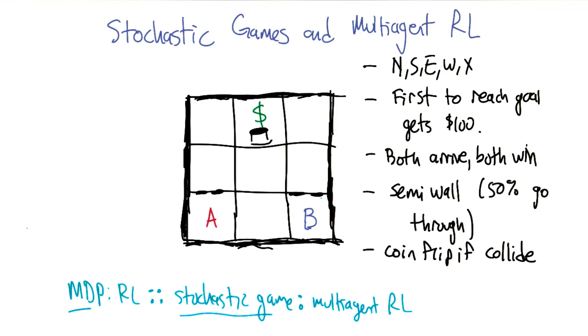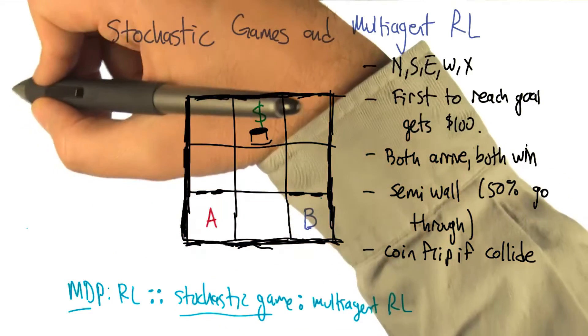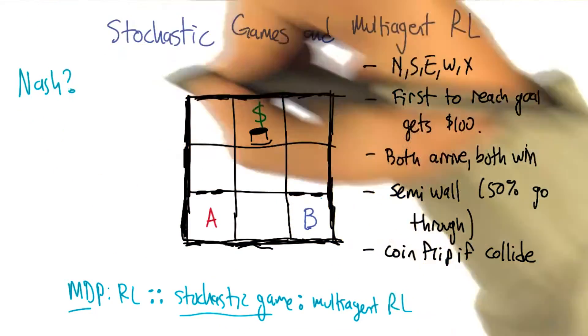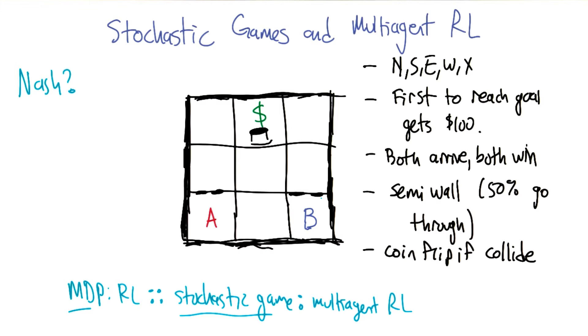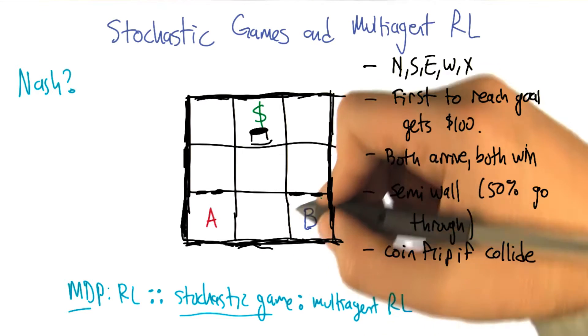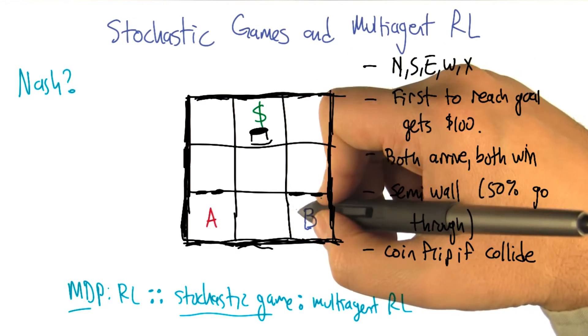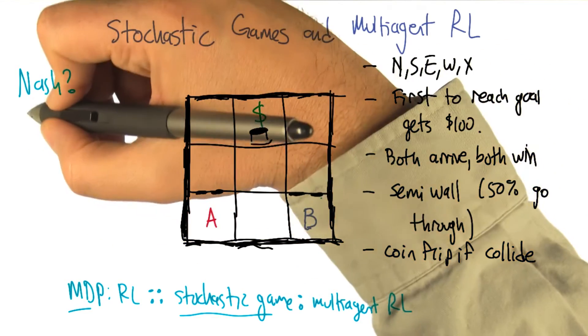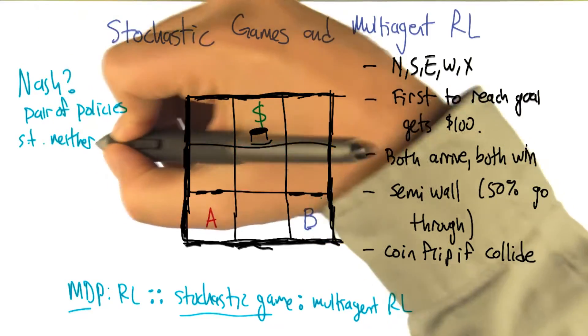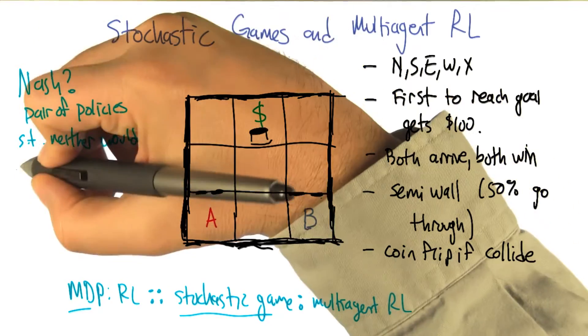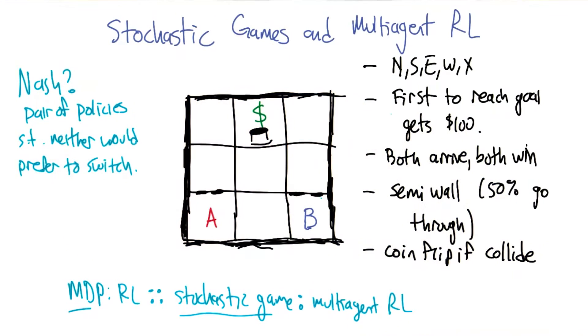Oh, let's think of another thing. Can you think of what it might mean to have a Nash equilibrium in a game like this? Oh, that's an interesting question. It would mean, well, what do you mean, what would it mean? It would mean that neither one of them would want to deviate. It would mean a pair of strategies for the two players. Now the strategies are multi-step things that say, they're like policies, right? So it's a pair of policies such that neither would prefer to switch.